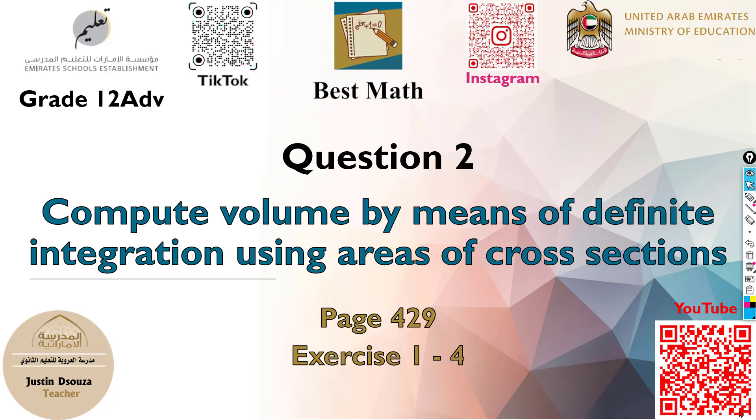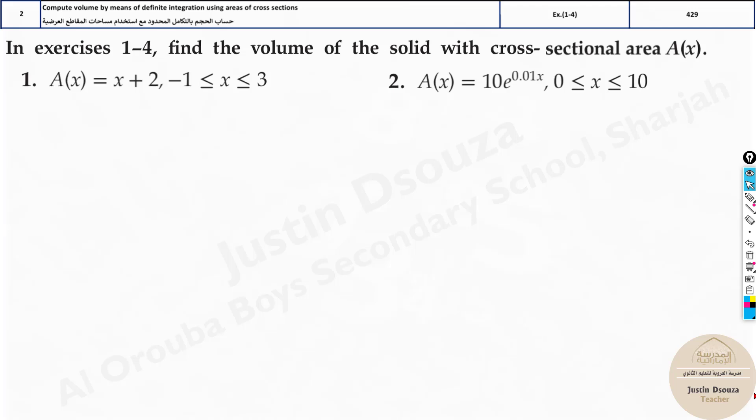Question 2 is to compute volume by means of definite integration where areas of cross-sections are given. Basically, these are the easiest of all problems because the area is given, you just have to find the volume by integrating at the given limits. That's it.